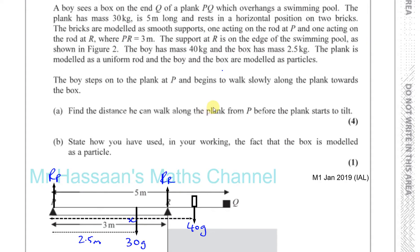The box has a mass of 2.5 kilograms. We take the mass of the box as if it's right on the end of the plank, acting as a particle, with a mass of 2.5G Newtons. I think for part A, that's everything we need.